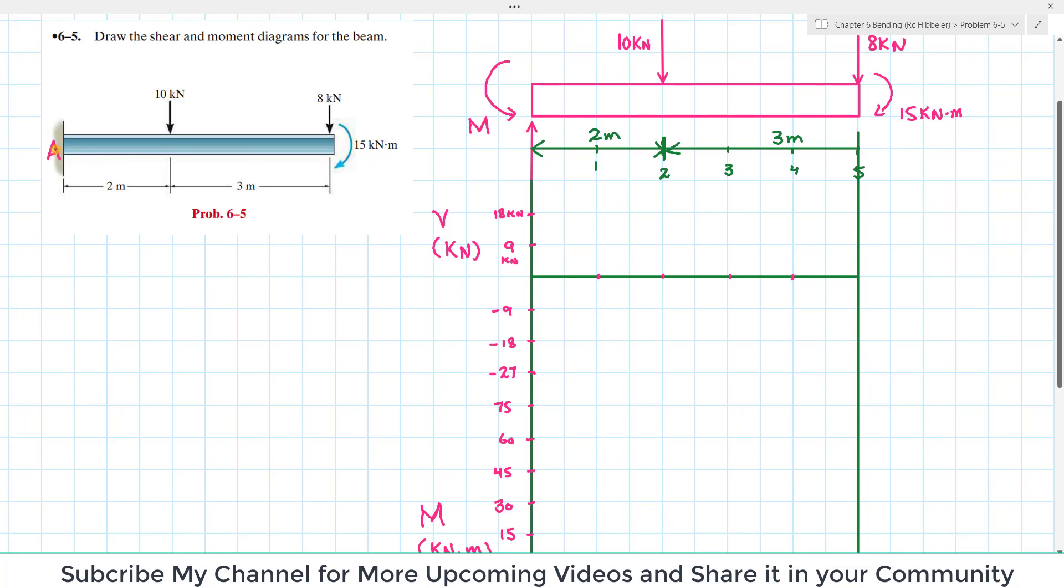To find the fixed reaction force at this fixed support, you have to remove it and give a vertical force at point A. If we remove this fixed support, you have to give a vertical reaction force and moment reaction at this point A, whereas the loading will be the same.